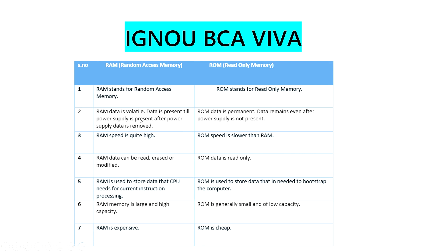RAM data is volatile while ROM data is permanent. RAM is generally faster and has more capacity than ROM. ROM stores permanent data. You can take a screenshot of the 5 differences between RAM and ROM and study from it.